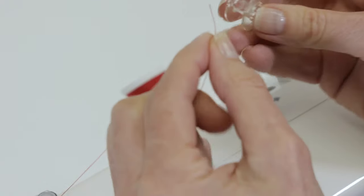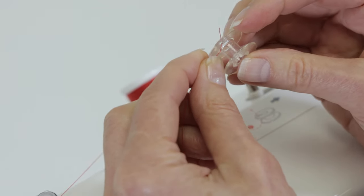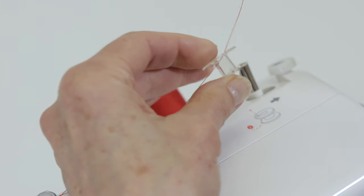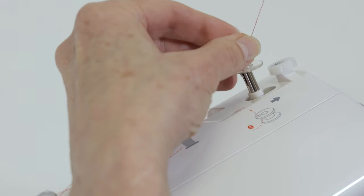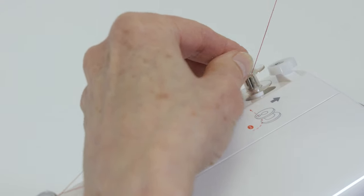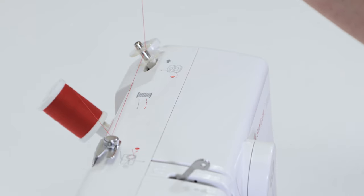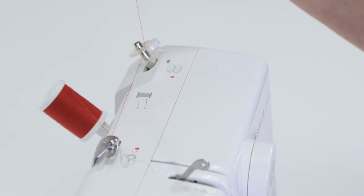Take the end of your thread and place it from the center out through one of the holes of your bobbin, like this. Continue holding the end of the thread as you set it on the bobbin winding spindle, and push it down as far as it will go, and then push it to the right. Continue holding the thread up above the bobbin and step on the foot control to wind the bobbin.